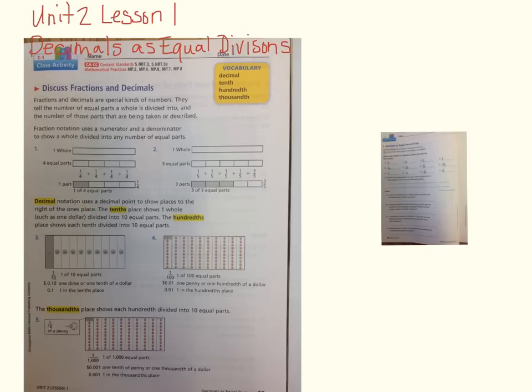Now we're going to be going into decimal notation. Decimal notation uses a decimal point to show places to the right of the one's place. The tenth place shows one whole, let's use a dollar for example, divided into ten equal parts. The hundredths place shows each tenth divided into ten equal parts.